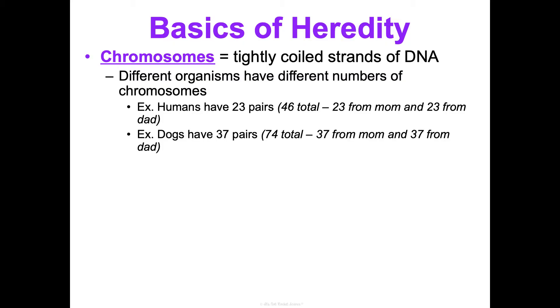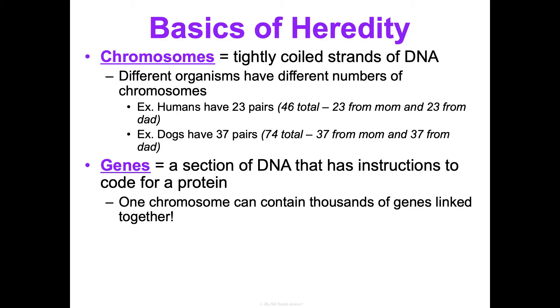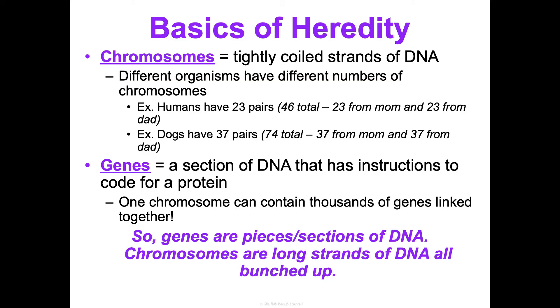Dogs have 37 pairs - 74 total in their body cells. Fruit flies have six total. It just depends on the organism. Now, genes - a gene is a section of DNA that has the instructions to code for a protein. One chromosome can have thousands of genes on it. That's really important.